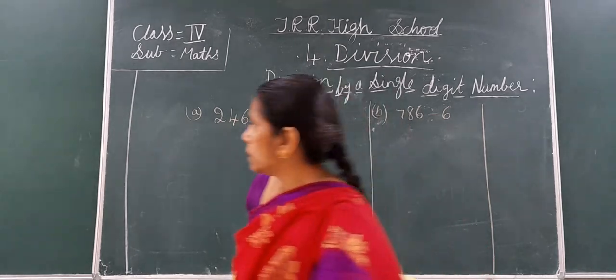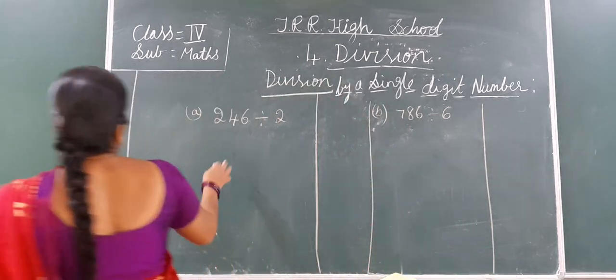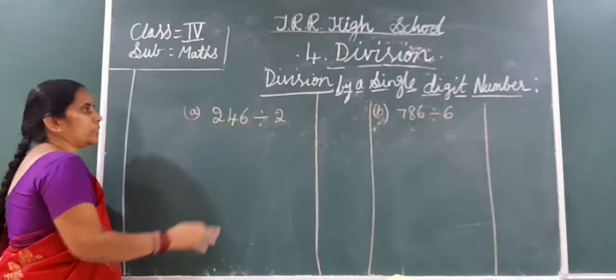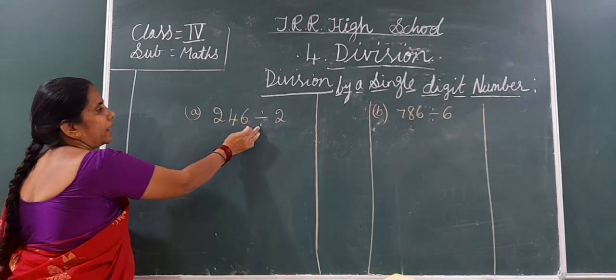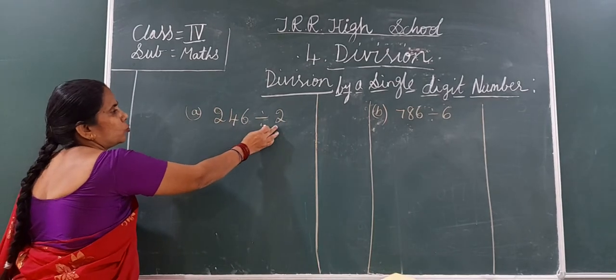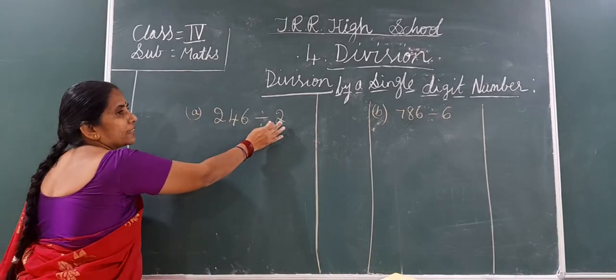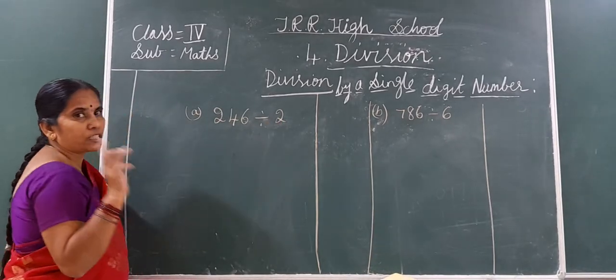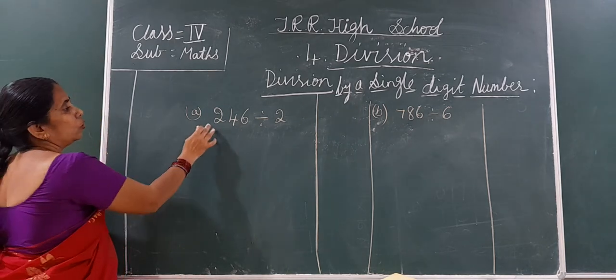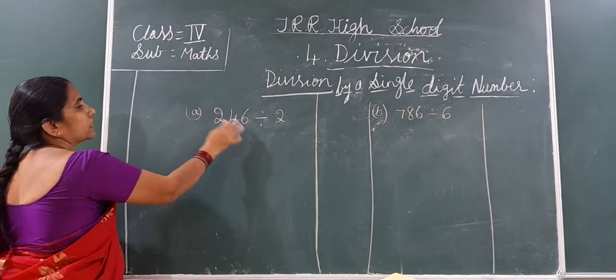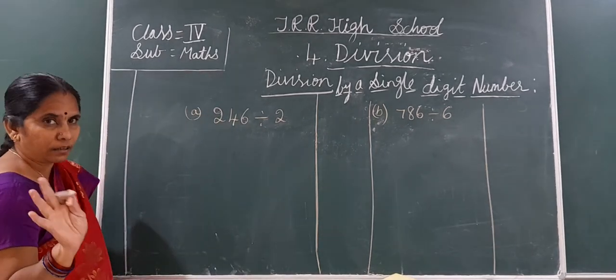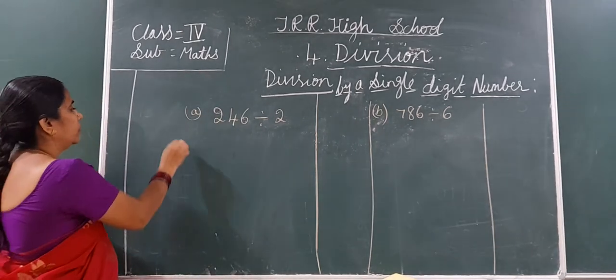Now we will start. Here the first one is 246 divided by 2. 2 is the divisor. 246 is the dividend. Remember it.